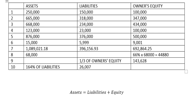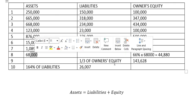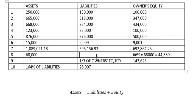Now we can find Liability, so we use this one minus this one, and we got the final answer, which is twenty-three thousand, one hundred twenty.